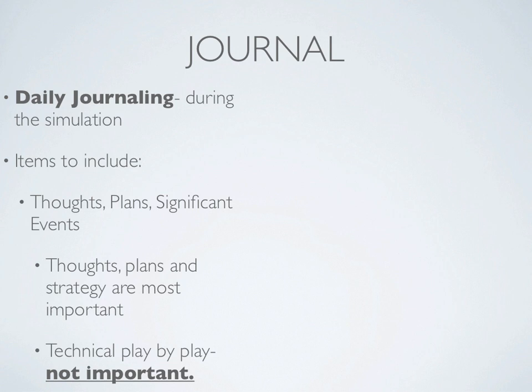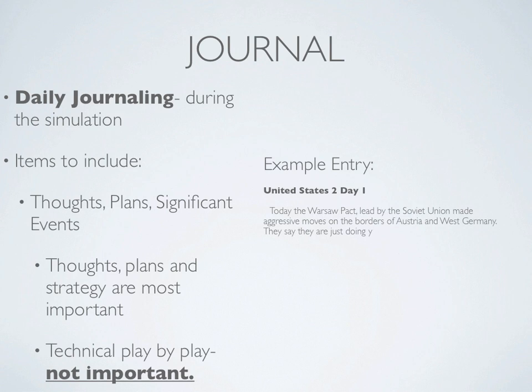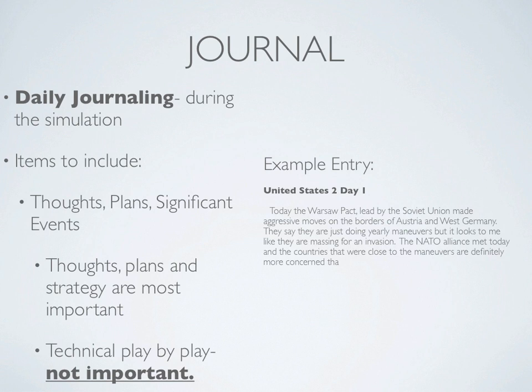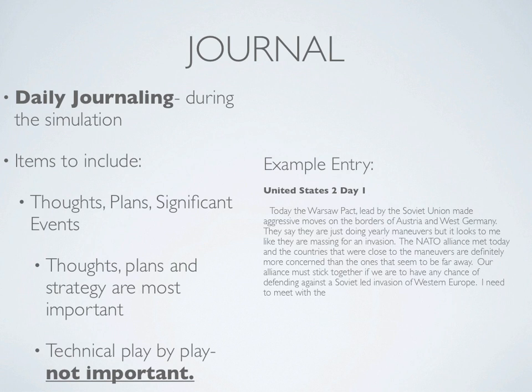Here is an example journal entry: 'Today the Warsaw Pact, led by the Soviet Union, made aggressive moves on the borders of Austria and West Germany. They say they are just doing yearly maneuvers, but it looks to me like they are massing for an invasion. The NATO alliance met today, and countries close to the maneuvers are more concerned than those far away. Our alliance must stick together if we are to have any chance of defending against a Soviet-led invasion of Western Europe. I need to meet with the far-western democracies and explain that it would only be a matter of time if the eastern countries should fall. We'll see how they react to that.'